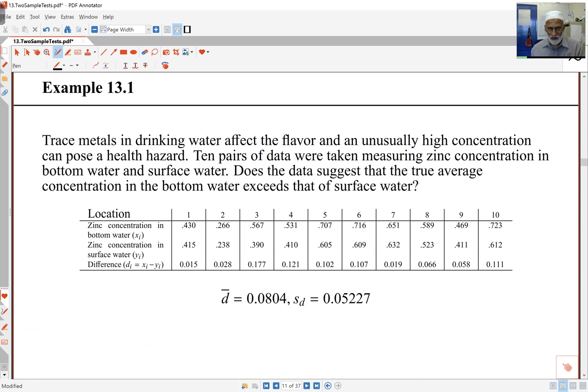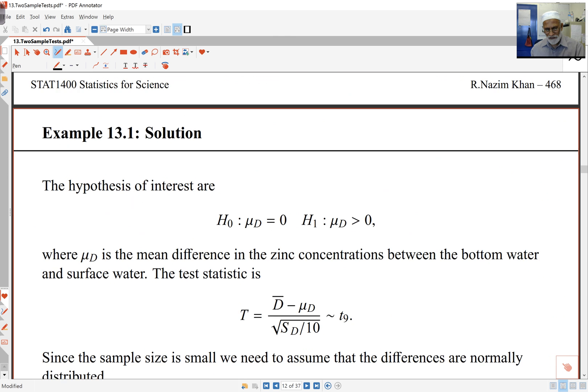So here's an example. I'm looking at the metals in the water. So I'm looking at zinc concentrations at the surface of the water, and also at the bottom of the water, like lakes or rivers or dams. And so here, I've got my ten locations. And they're paired, because for the same location, I've got the zinc concentration at the bottom, and the zinc concentration at the surface. And so, I'm going to difference them first. So here are the differences. And I've found the difference, the mean of the differences, and the standard deviation of the differences.